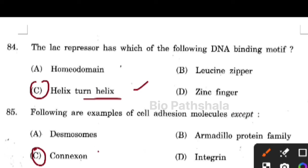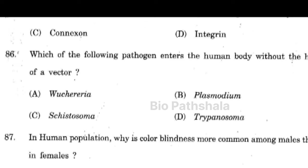Next question: which of the following pathogens enters the human body without the help of a vector? That is option number C — Schistosoma.